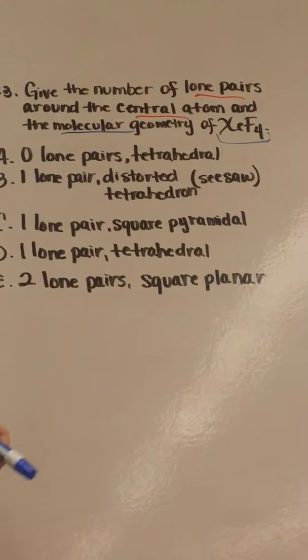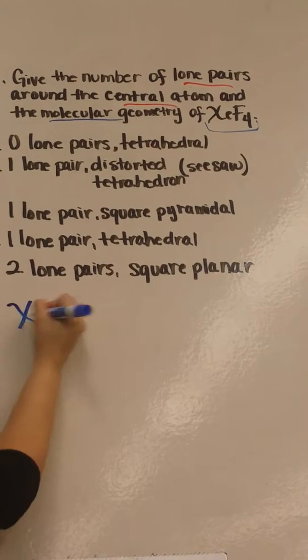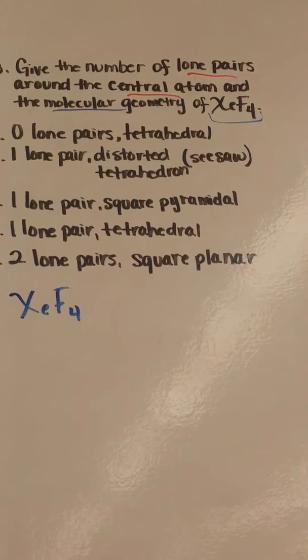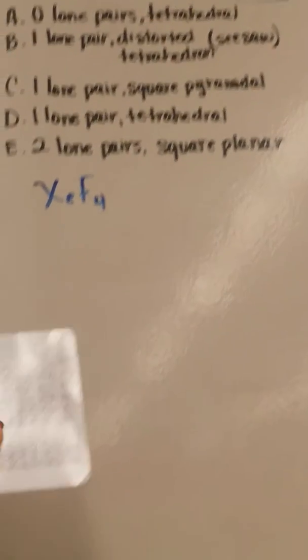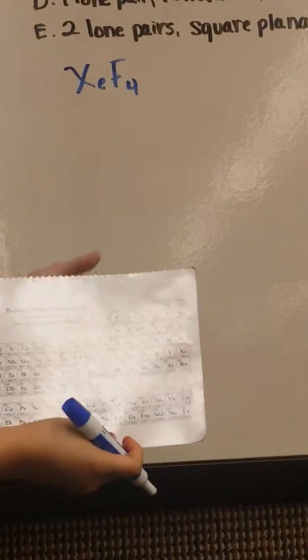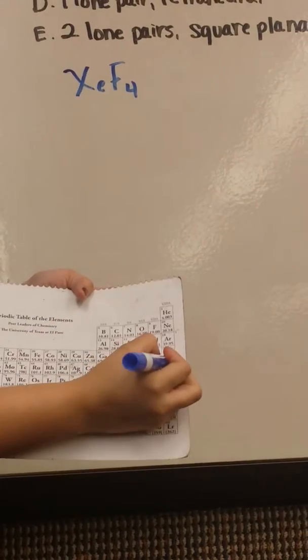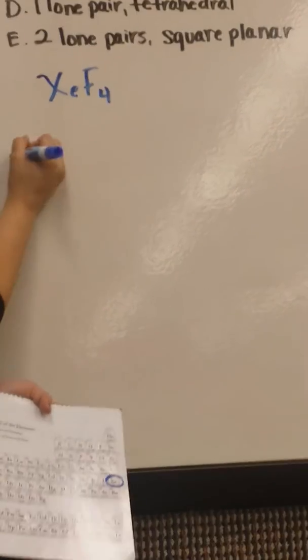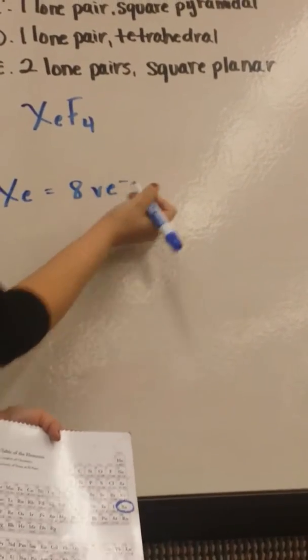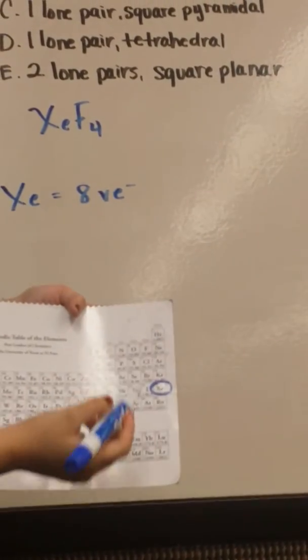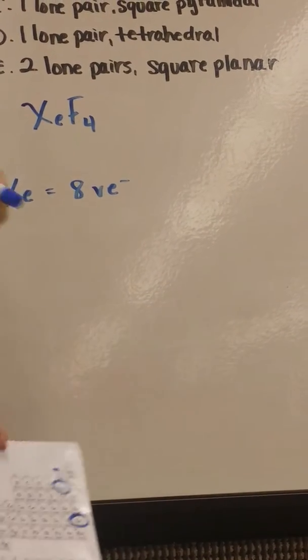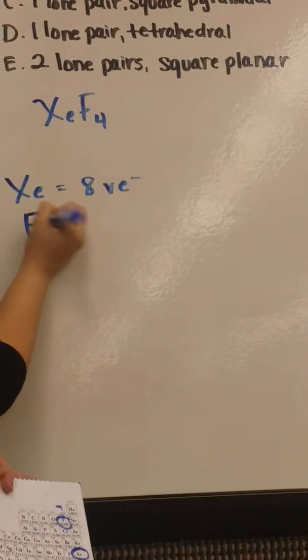First we have to see how many valence electrons each of these have in order to draw the structure. We see that xenon is in group 8, so it will have 8 valence electrons. And we look for fluorine, and it is in group 7, so it does have 7 valence electrons.